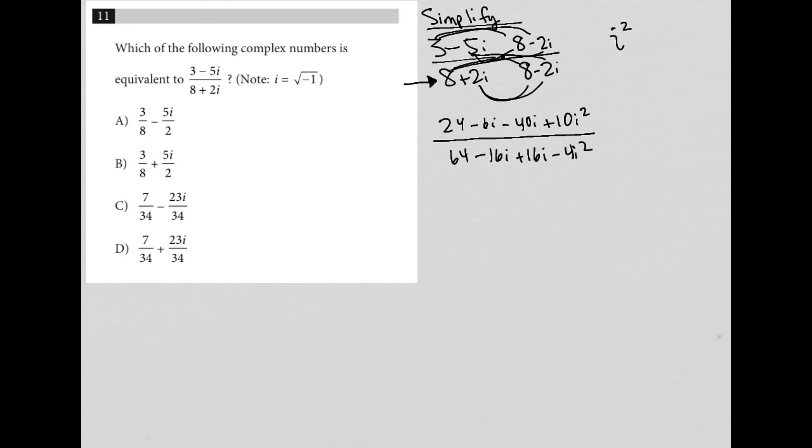i squared is equal to negative 1. So therefore, this positive 10i squared turns into a negative 10. And this negative 4i squared turns into a positive 4. So when I simplify my numerator, 24 minus 10, I get 14. Negative 6i minus 40i, I get negative 46i.